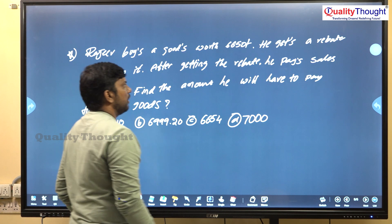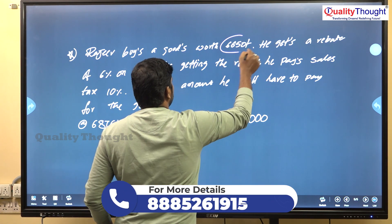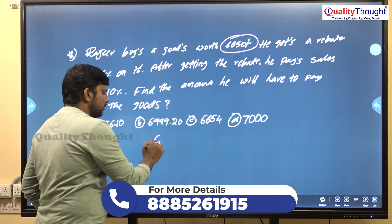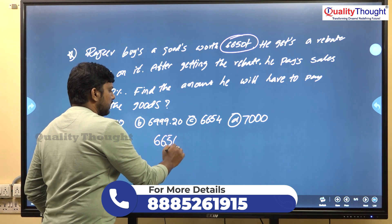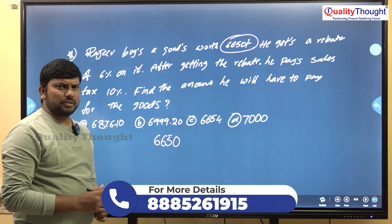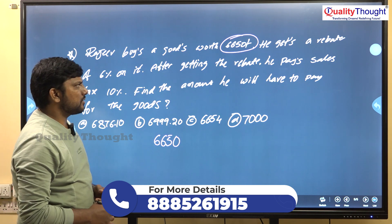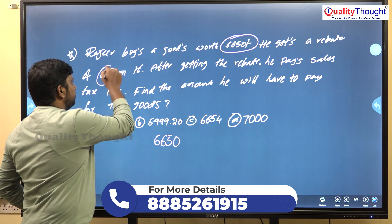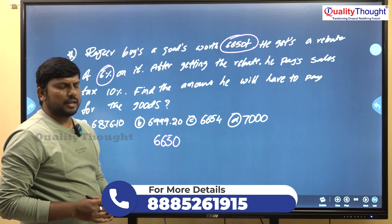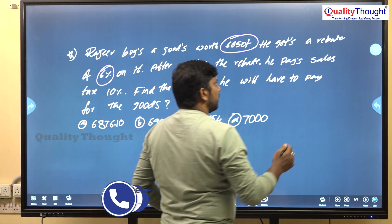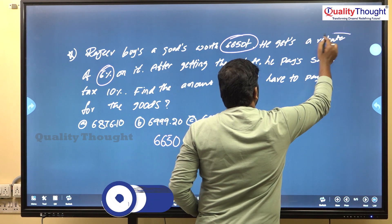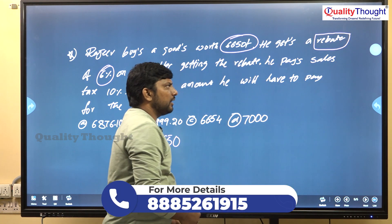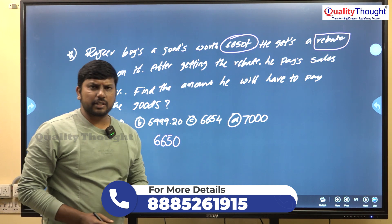Next question: Rajiv buys goods worth 6,650 rupees. He gets a rebate of 6% on it. Note that rebate means discount — most students are doubtful about this word.